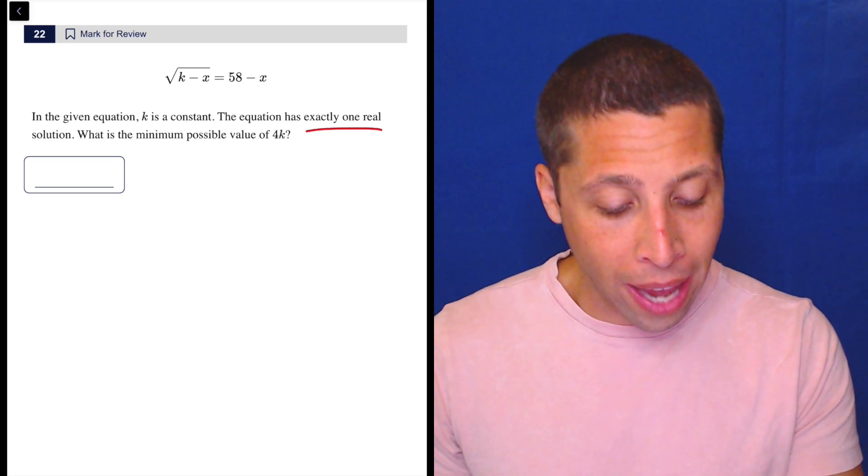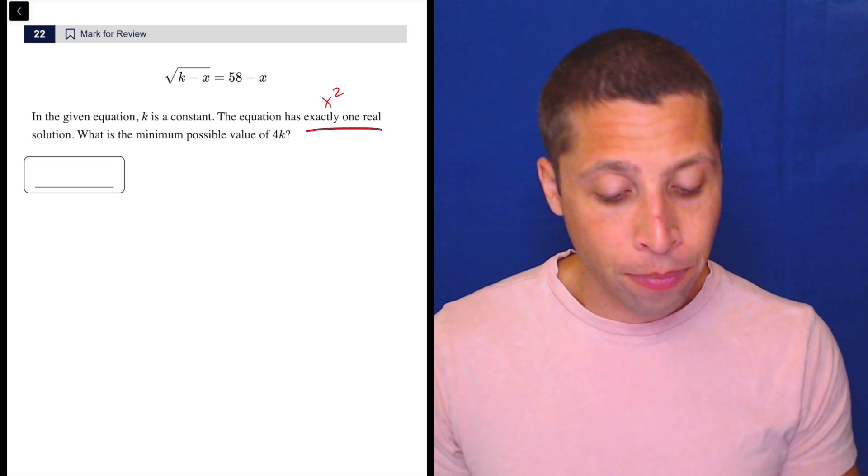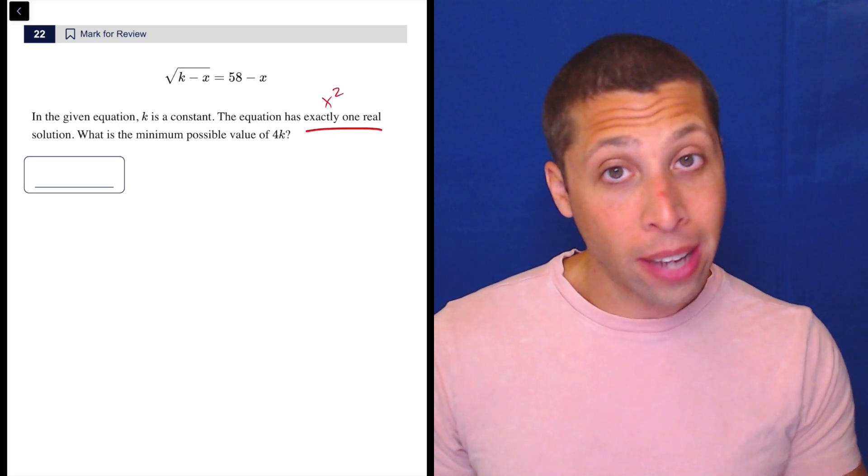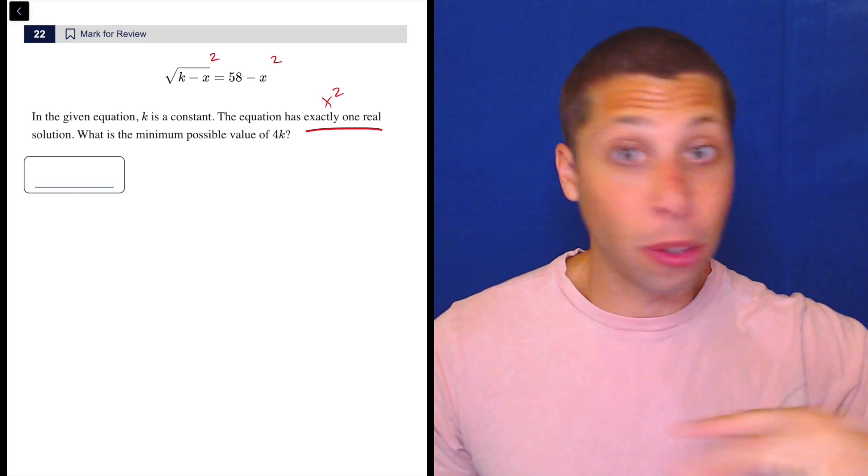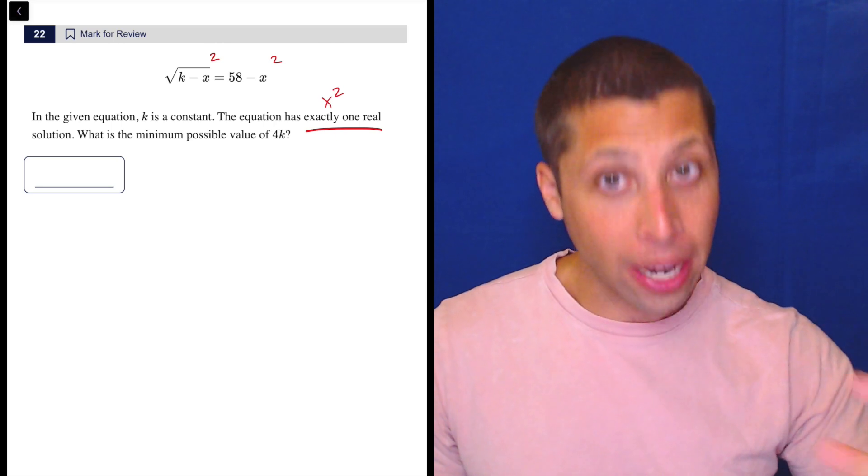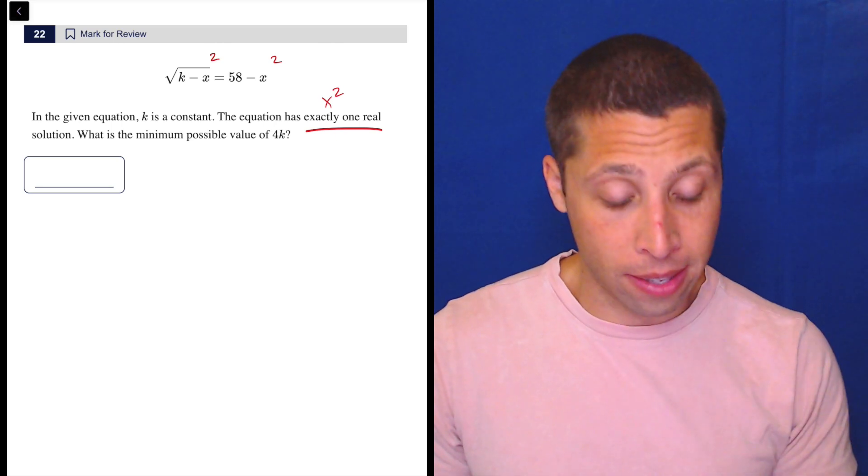This is actually a case where we have quadratics. We have an x squared. Now, it doesn't look like it, but if I square both sides of this thing to get rid of the radical, which I definitely don't want, I'm going to have an x squared. And that's kind of where this thing comes from.